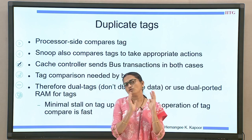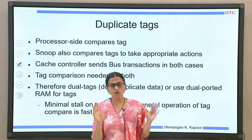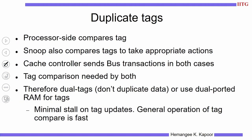When moving a uniprocessor cache to a cache coherent multiprocessor system, we need to duplicate the tag storage. The processor uses one tag array for comparison while the snoop controller uses a separate tag array — a dual tag array. The data is not duplicated, only the tags, or alternatively we can use a dual-ported RAM for the tags. This guarantees the processor is not stalled for long; the common case is very fast.